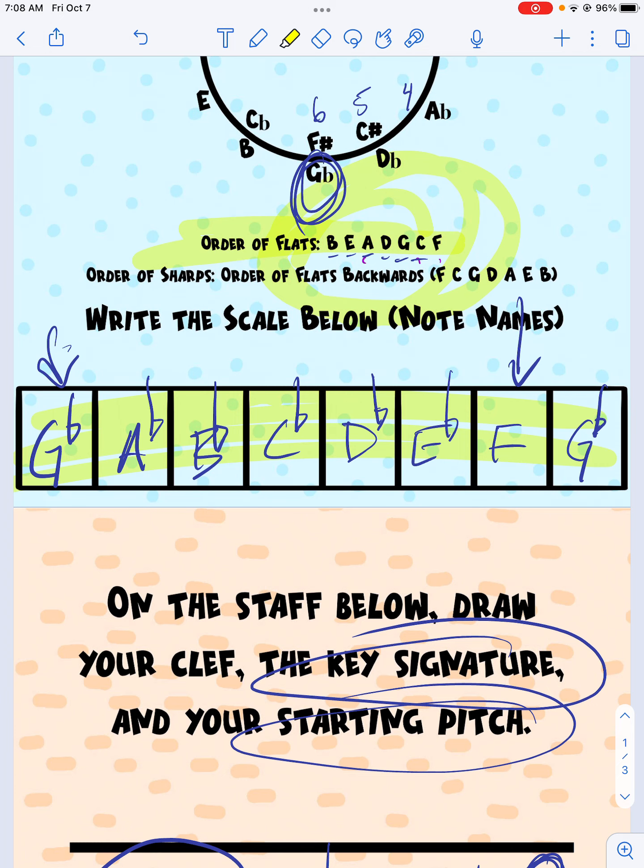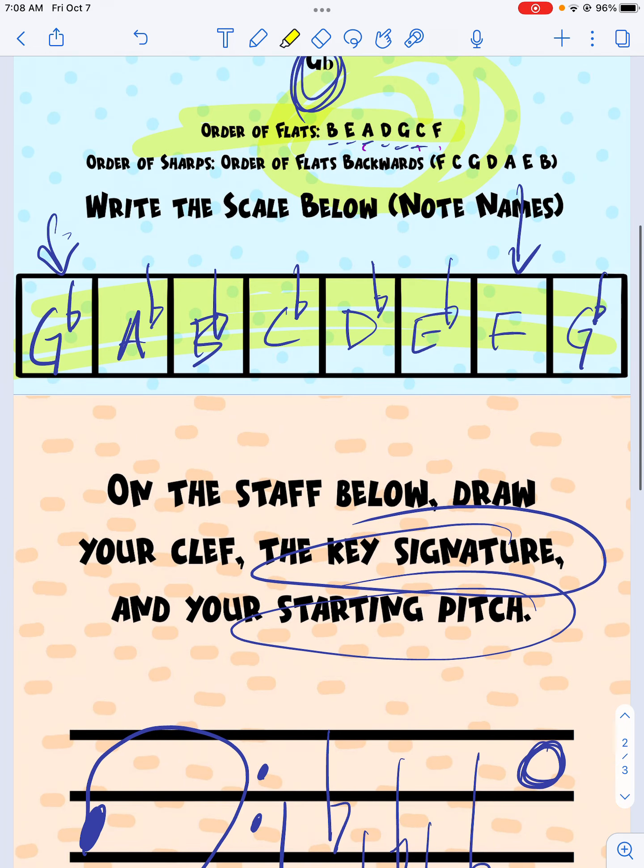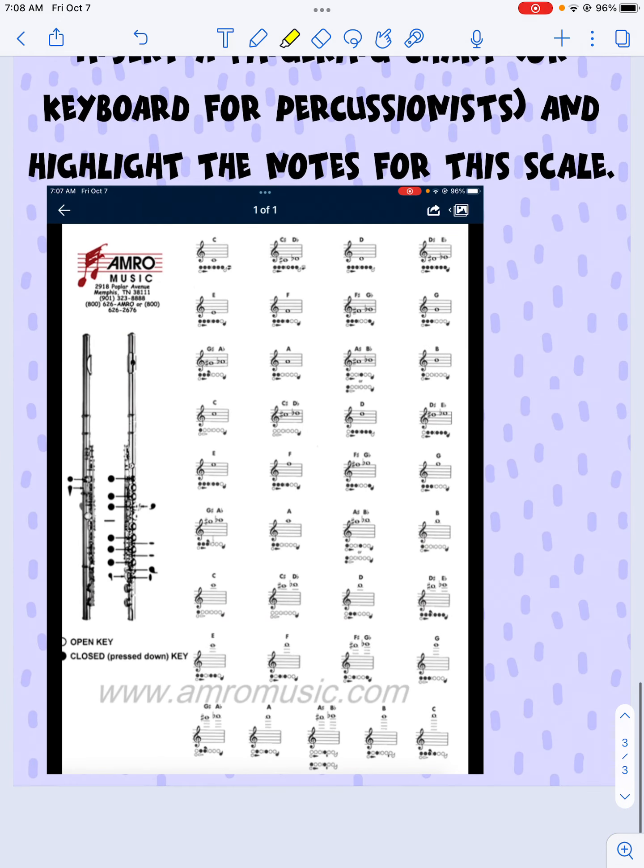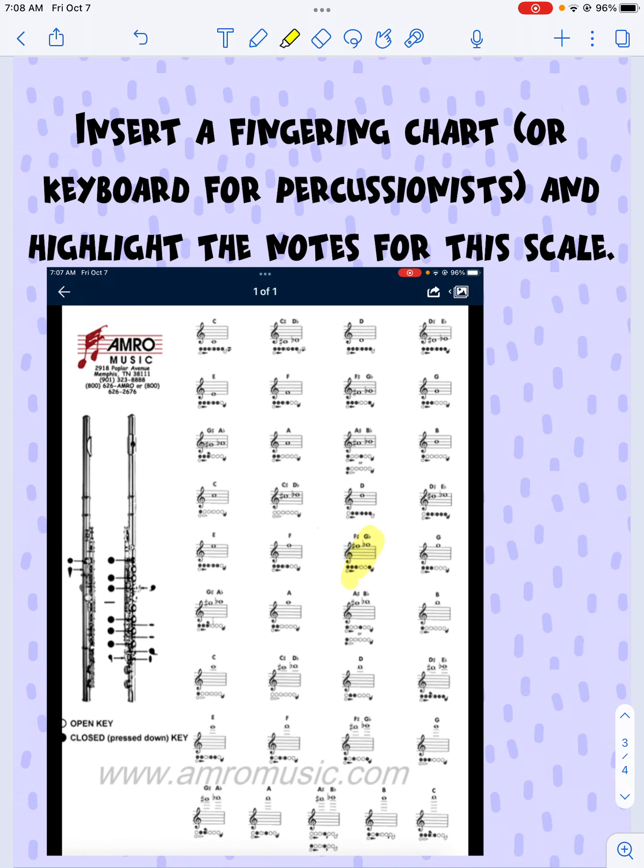And then I take my highlighter, and I go to these letter names from this first page. This set of letter names right here is where I get my notes, so I know what to highlight. So using those letter names, I find my first G flat. Then the next note was A flat. Then it was B flat. And then you'll notice it's C flat. So this is a C natural, so that's not the right note. So it's a half step lower. It's not labeled as C flat here, but it turns out it's a B. That could be a little confusing. Then it was D flat. Then it was E flat. Then it was F natural. And then it was G flat. I highlight those.